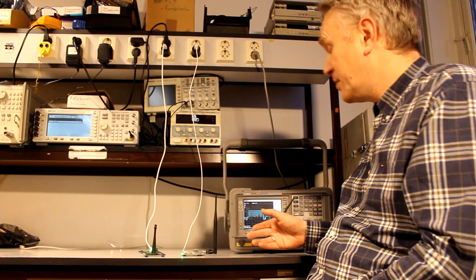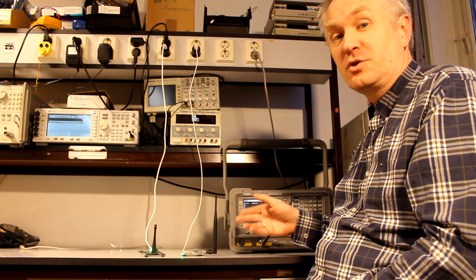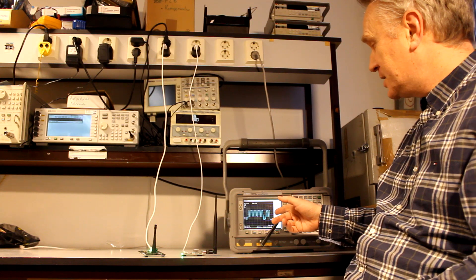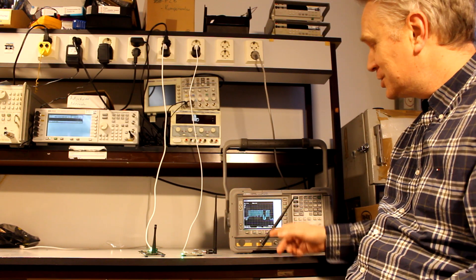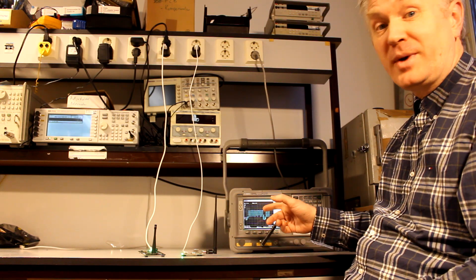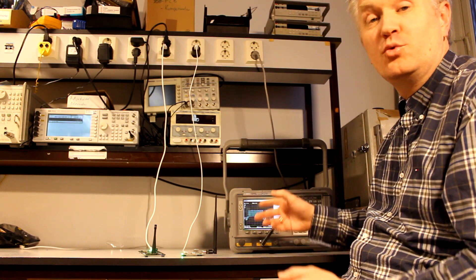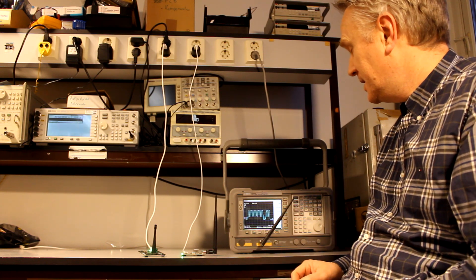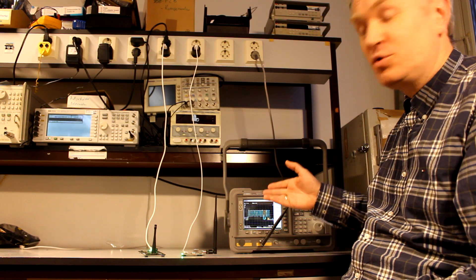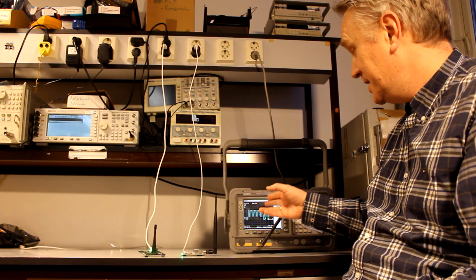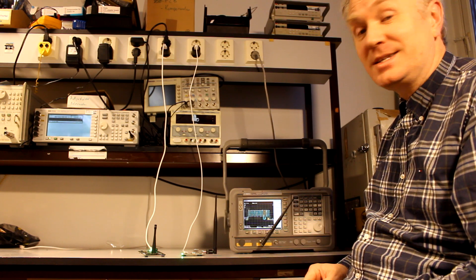Now the system has been running for a couple more minutes after we introduced the noise source. What you see in the spectrum analyzer is that the two channels which are closest to the noise source have been removed from the hopping pattern, and we have added two alternative channels to use instead. When I compare it to the old hopping plan sequence in yellow here, you can clearly see the difference.